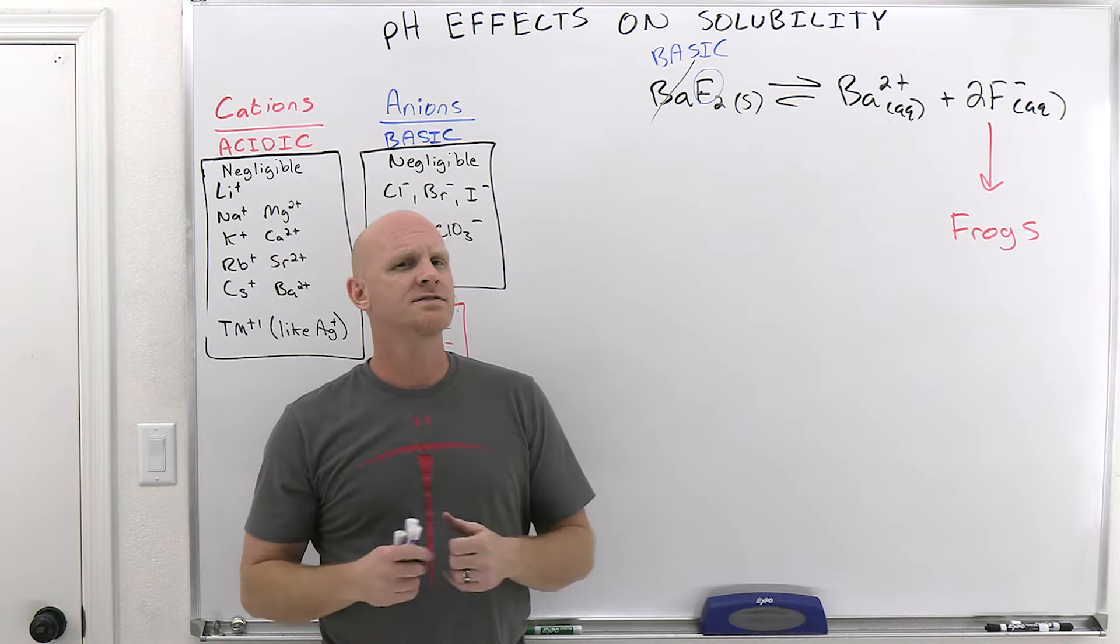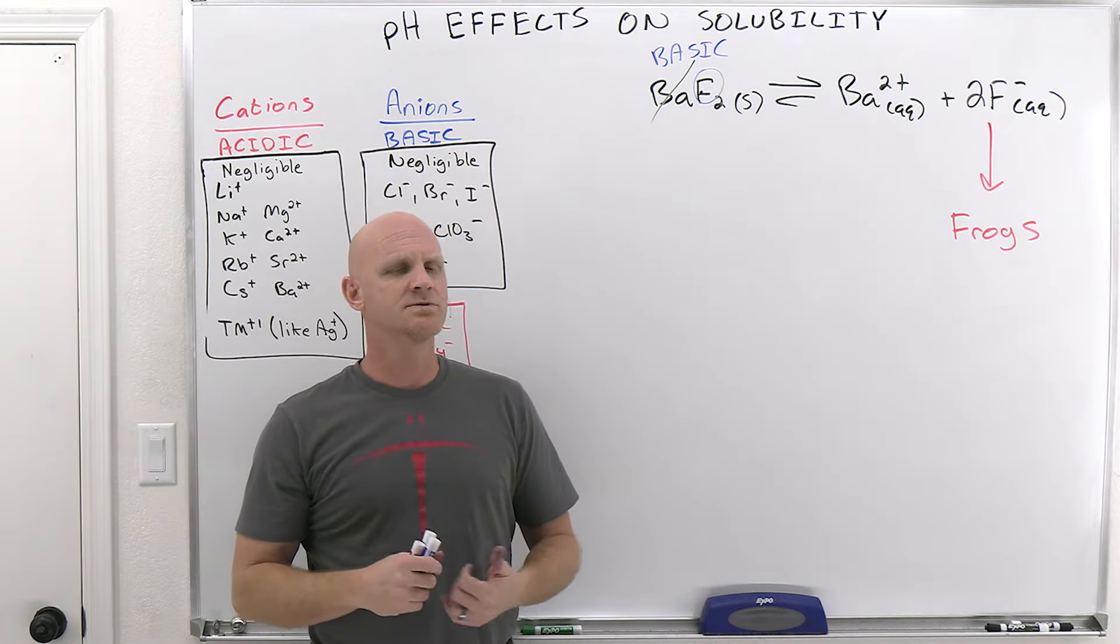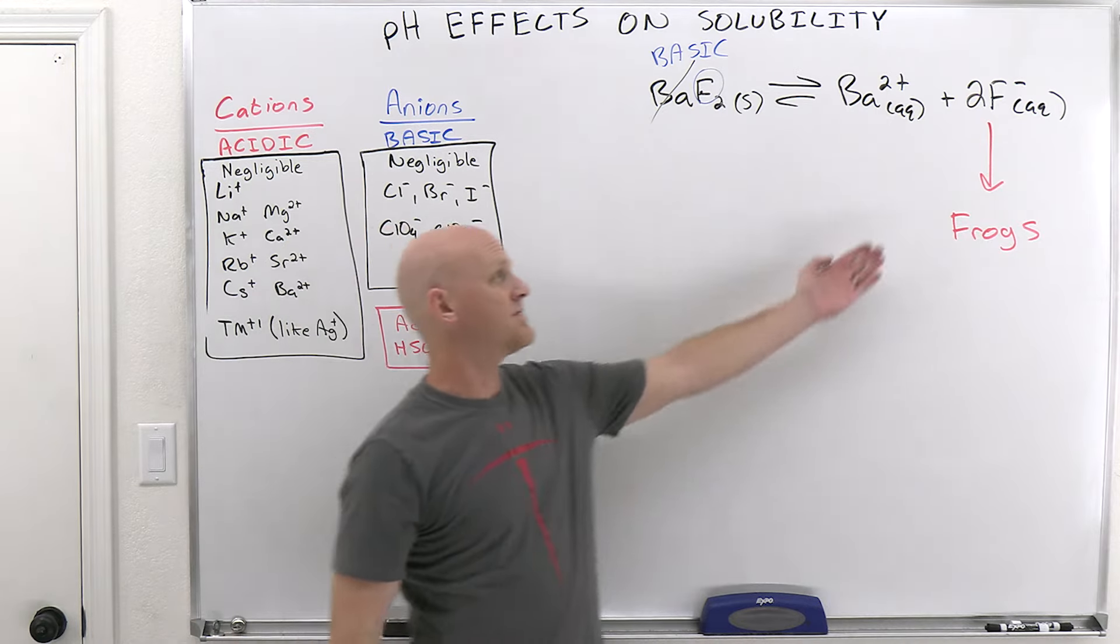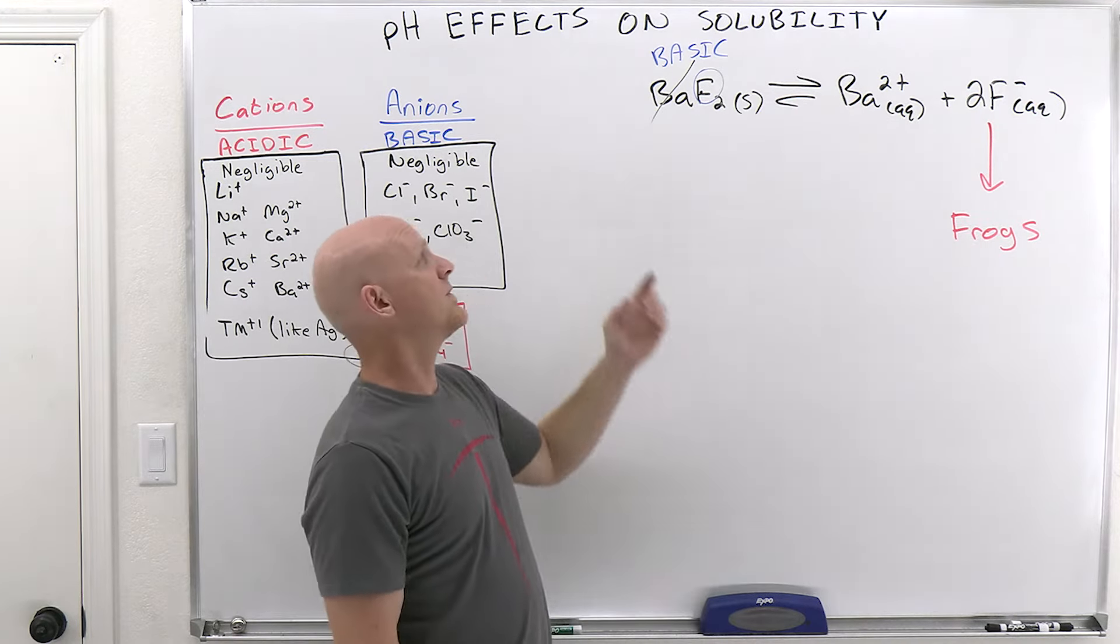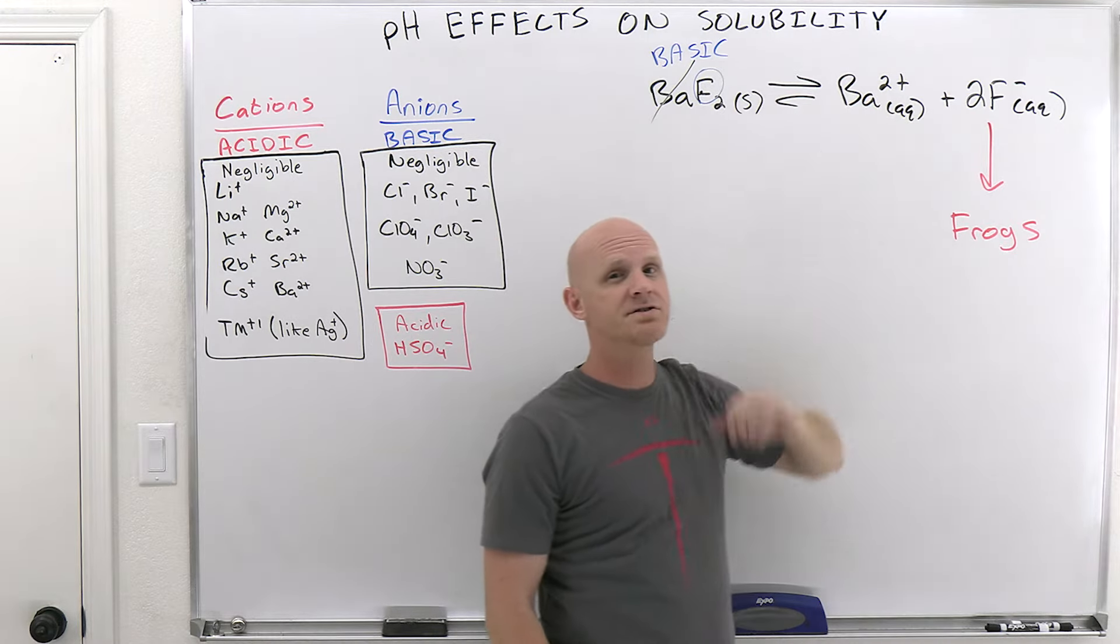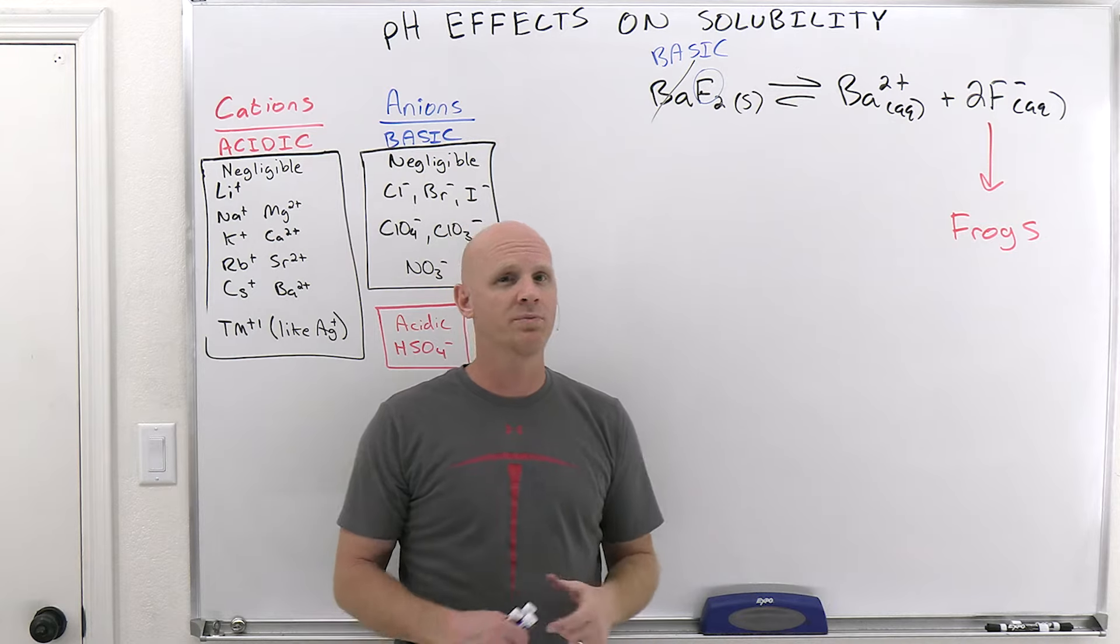Well, if I convert all the fluoride ions into frogs, then the system is no longer going to be at equilibrium anymore. In this case, it's not going to have enough fluoride to be at equilibrium. And so as a result, more barium fluoride is going to have to dissolve to replenish the fluoride to get back to being at equilibrium.